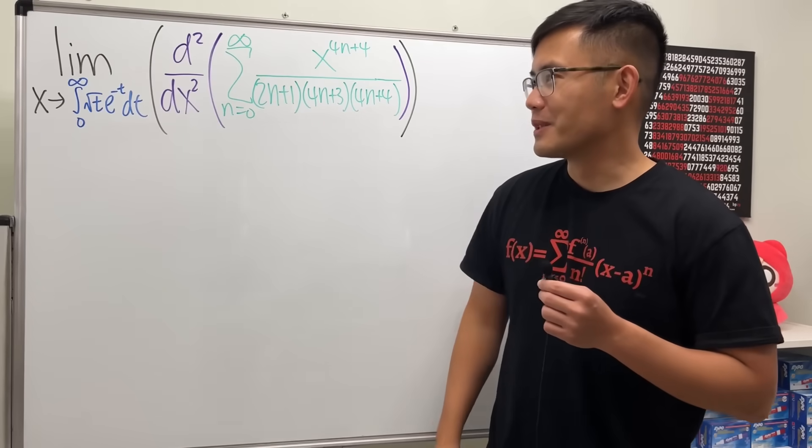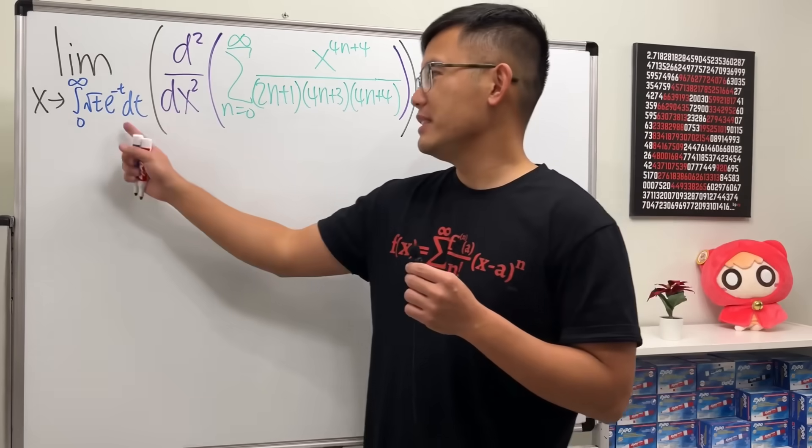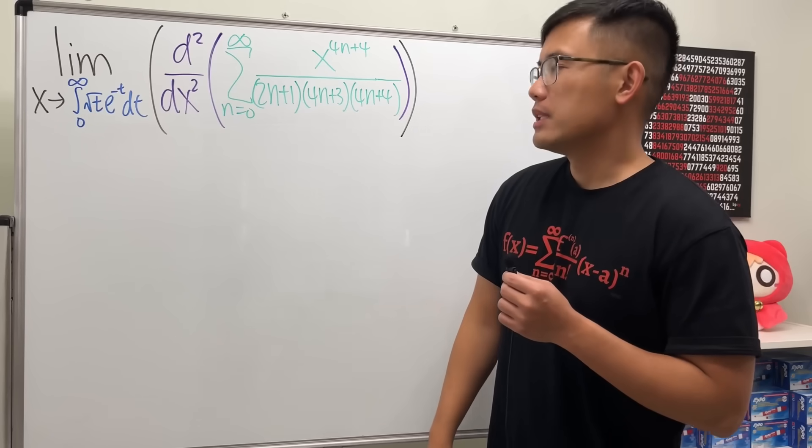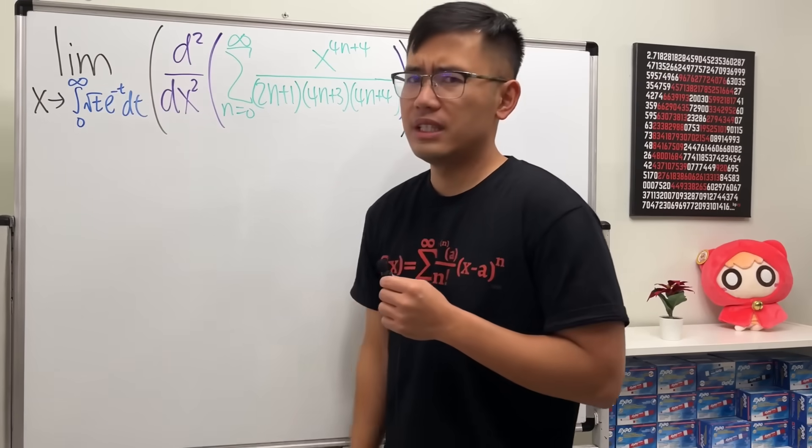This is a solution to my all-in-one calculus question, and let's get started with this integral right here. As we can see, we have a square root of t here and also a negative there.